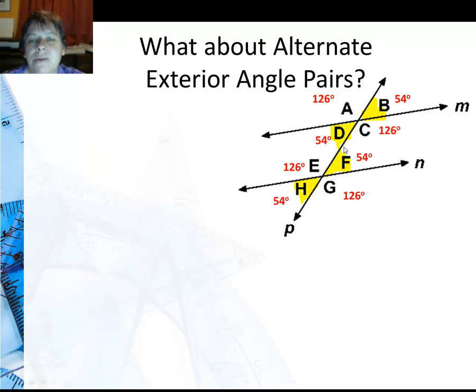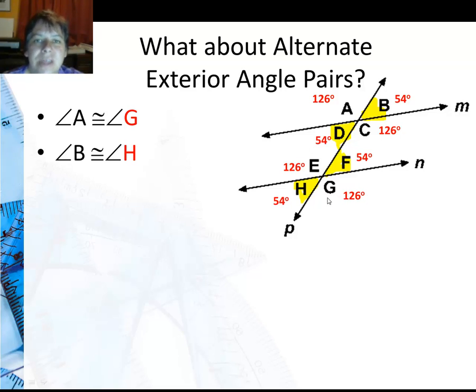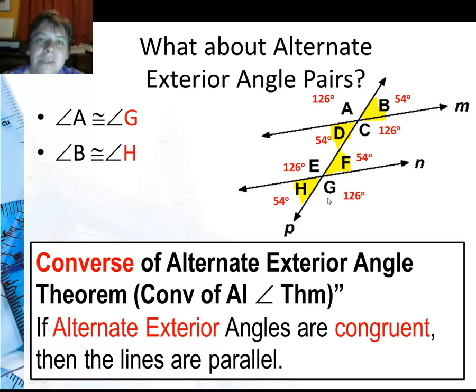What about the alternate exterior angles? Looking at angle A, that goes with angle G, so those are congruent. And angle B goes with angle H—those are congruent. We see if the alternate exterior angles are congruent, then the lines are parallel. This is the converse to the alternate exterior angle theorem.